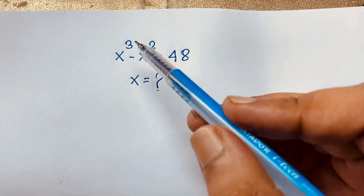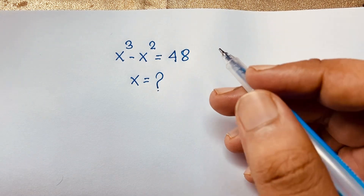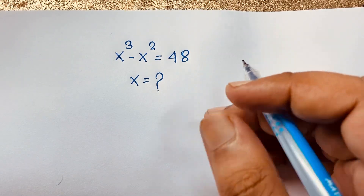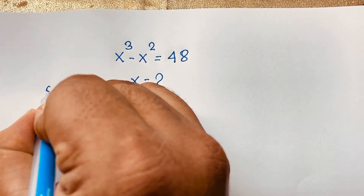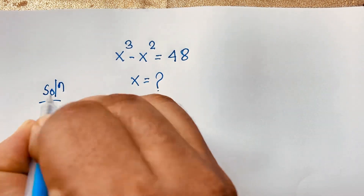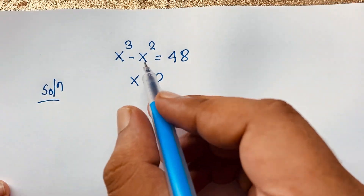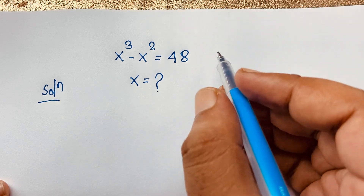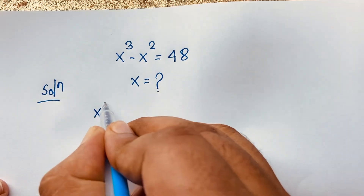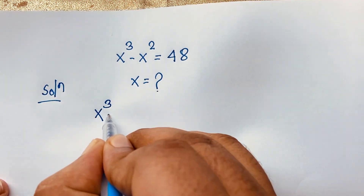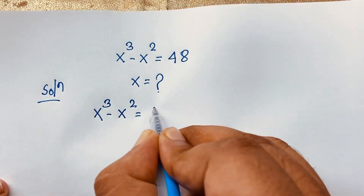Here is x to the power 3, this is x squared, and this is 48. So how to solve this interesting math problem? Our math solution: x to the power 3 minus x squared is equal to 48. So I take our question first of all — it will be x to the power 3 minus x squared is equal to 48.